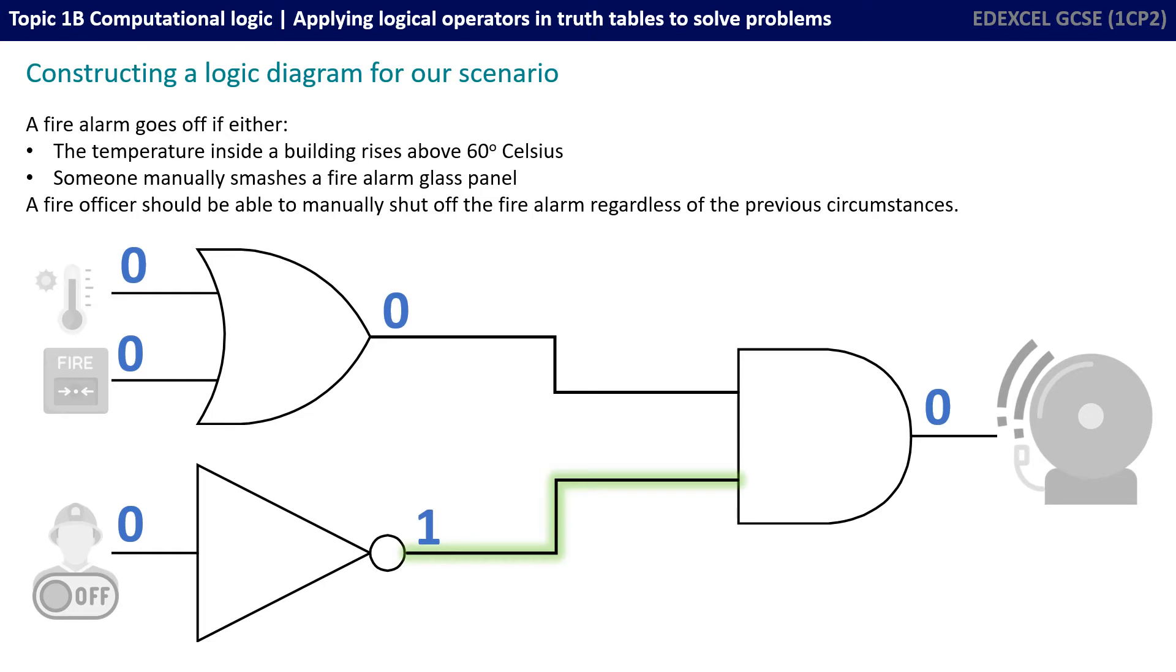I've changed the color of the various images here to black and white and that indicates that that input or output is currently off or not active and that's being represented here by a zero. This is our initial state.